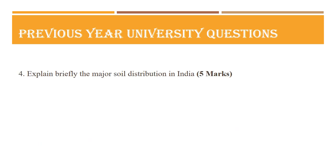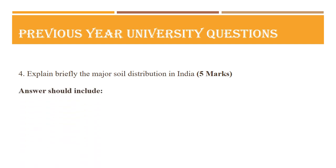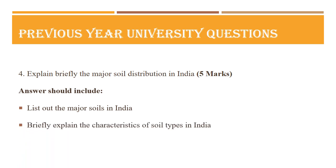The fourth question is: explain briefly the major soil distribution in India, asked for five marks. Your answer should list the different types of soils found in India and give a brief explanation of the characteristics of the various soil types. Select the most important three to five soil types and list their characteristics briefly, since it is asked for only five marks.